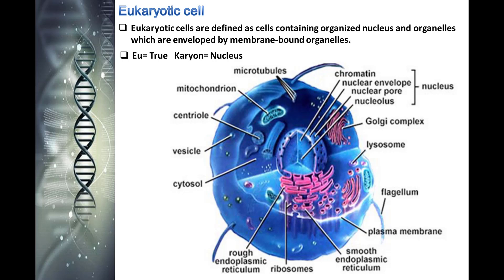Like prokaryotic cells, a eukaryotic cell has a plasma membrane, cytoplasm, and ribosomes. However, unlike prokaryotic cells, eukaryotic cells have a membrane-bound nucleus and numerous membrane-bound organelles including the endoplasmic reticulum, Golgi apparatus, chloroplasts, and mitochondria, as well as several rod-shaped chromosomes.